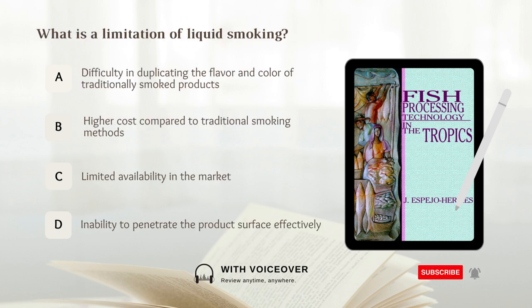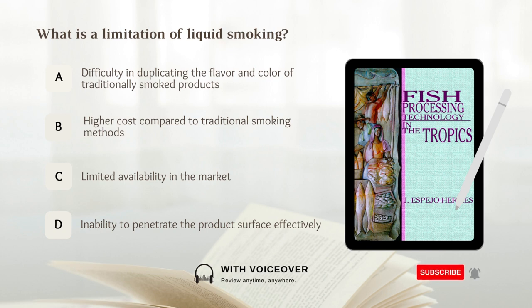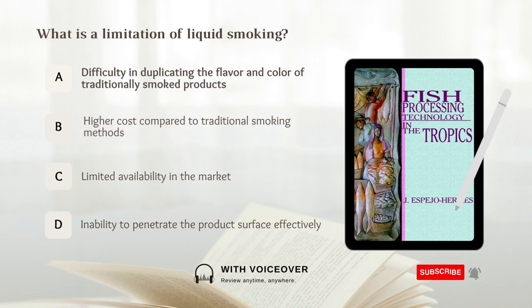What is a limitation of liquid smoking? A. Difficulty in duplicating the flavor and color of traditionally smoked products. B. Higher cost compared to traditional smoking methods. C. Limited availability in the market. D. Inability to penetrate the product's surface effectively. Answer: A. Difficulty in duplicating the flavor and color of traditionally smoked products.